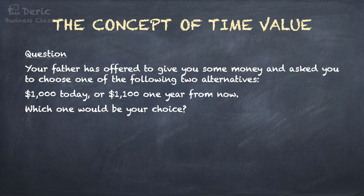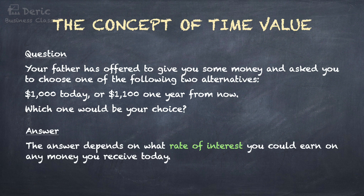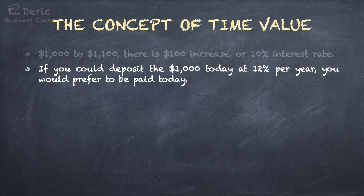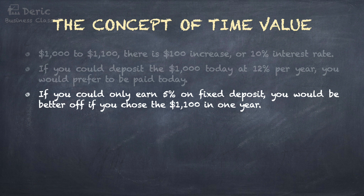Another question for you. Let's say your father has offered to give you some money and asked you to choose one of the following two alternatives: $1,000 today or $1,100 one year from now. Which one would be your choice? Before making your decision, it is important to know that the answer depends on what rate of interest you could earn on any money you receive today. From $1,000 to $1,100, there is an increase of $100, or a 10% interest rate. So if you could deposit the $1,000 today at 12% per year, you would prefer to be paid today. What if you could only earn 5% on fixed deposit? You would be better off if you chose the $1,100 in one year. In short, your decision depends very much on what rate of interest you could earn after receiving the money.